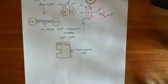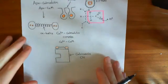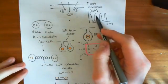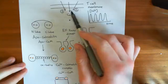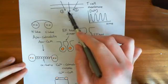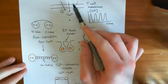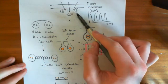Welcome back to this next video on T-cell activation. So far what we've seen is that when a T-cell receives signal 1 and signal 2, it's going to cause these calcium oscillations in the cytoplasm of the T-cell, because some membrane-bound protein is causing the opening of calcium channels and allowing calcium from the extracellular fluid to move into the intracellular fluid.